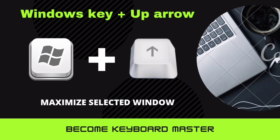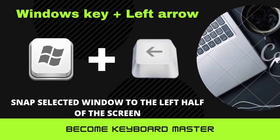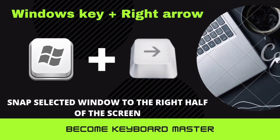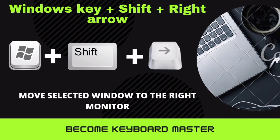Windows key plus Up Arrow is used to maximize the selected window. Windows key plus Down Arrow is used to minimize the selected window. Windows key plus Left Arrow is used to snap the selected window to the left half of the screen. Windows key plus Right Arrow is used to snap the selected window to the right half of the screen. Windows key plus Shift plus Left Arrow is used to move the selected window to the left monitor. Windows key plus Shift plus Right Arrow is used to move the selected window to the right monitor.